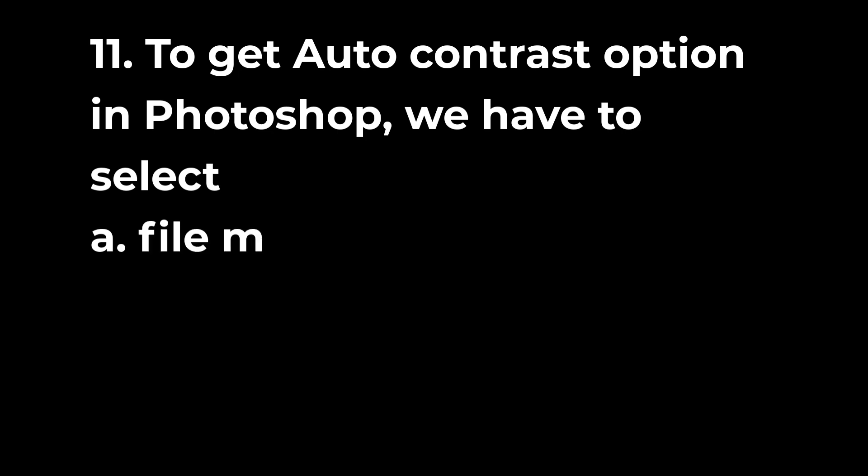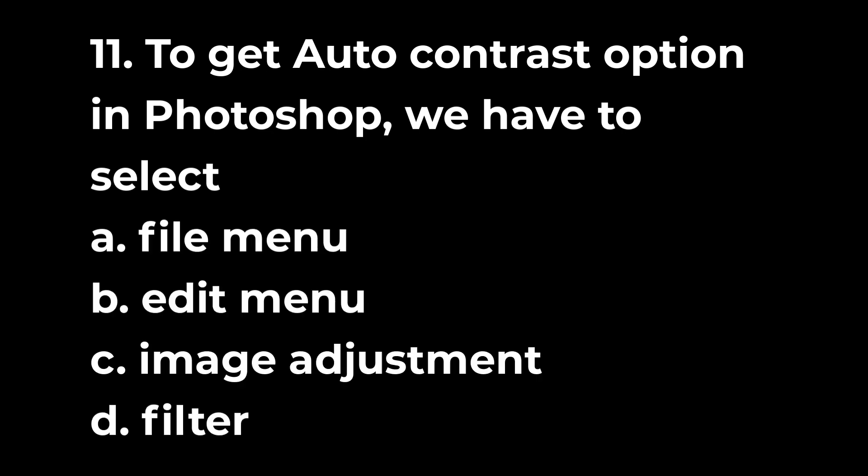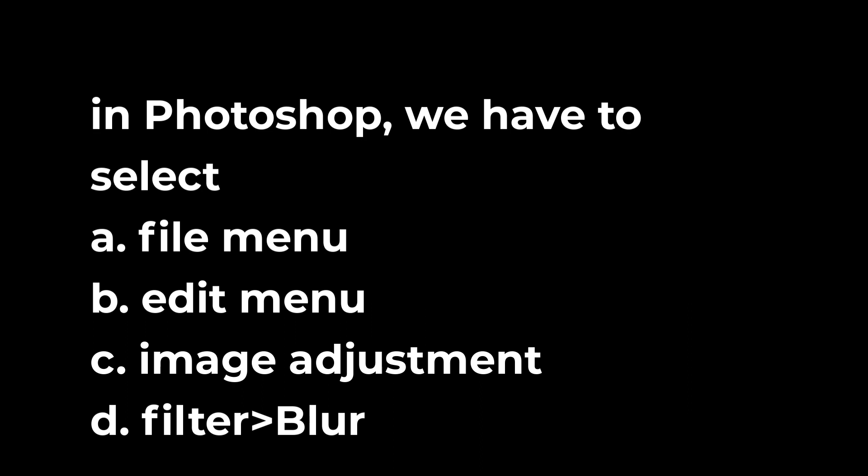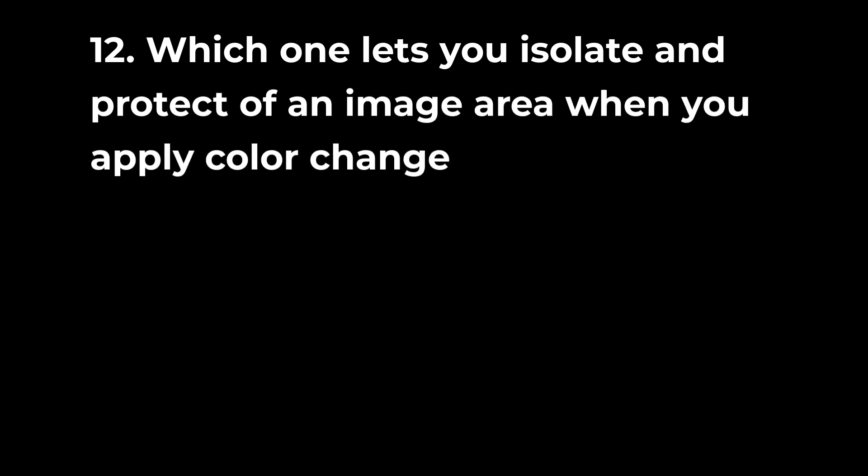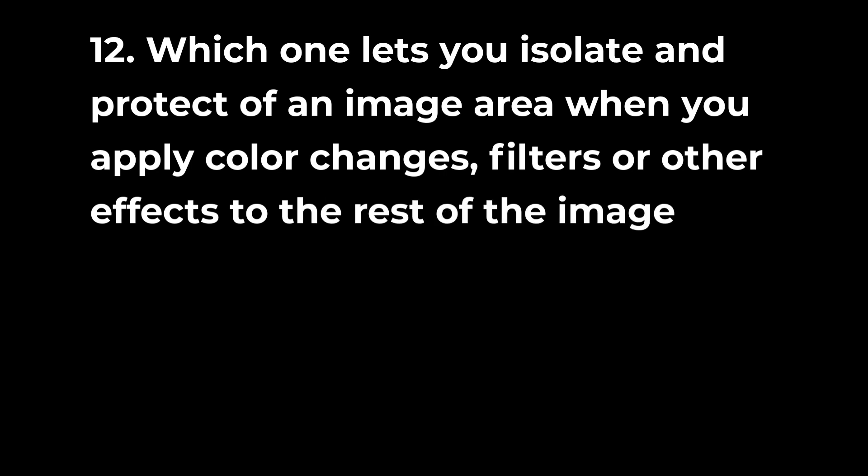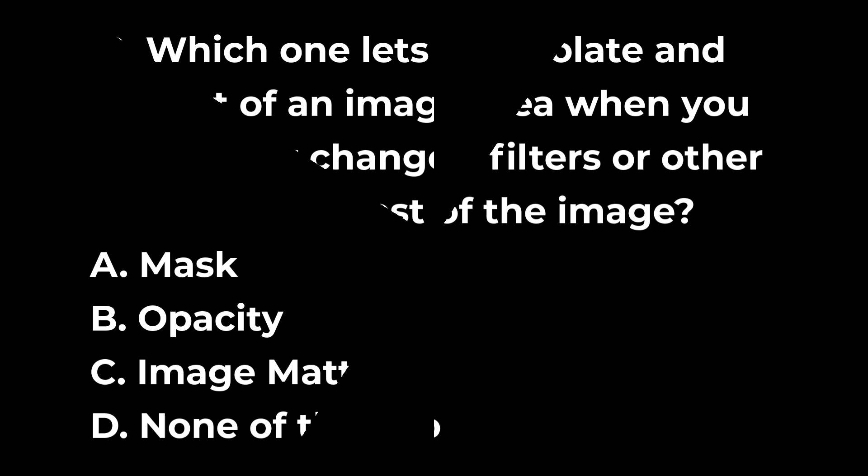Question 11: To get auto-contrast option in photoshop, we have to select a. File menu b. Edit menu c. Image adjustment d. Filter blur. Question 12: Which one lets you isolate and protect of an image area when you apply color changes, filters or other effects to the rest of the image? a. Mask b. Opacity c. Image matte d. None of the above.